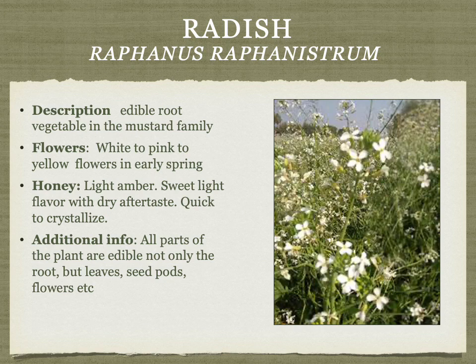Radish is an edible root vegetable. If grown for seed production, insects are needed to pollinate it. With a large enough field, bees can sometimes produce a honey that is light amber, sweet and light, with a dry aftertaste and quick to crystallize.